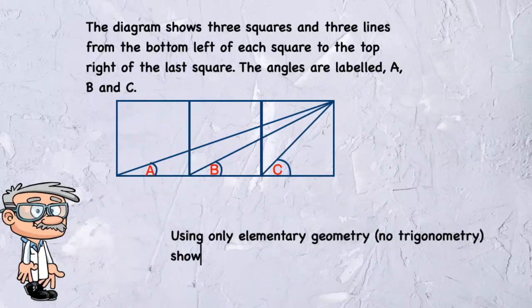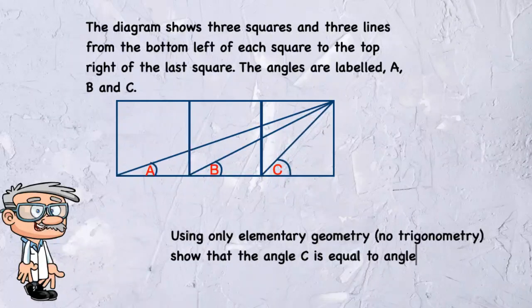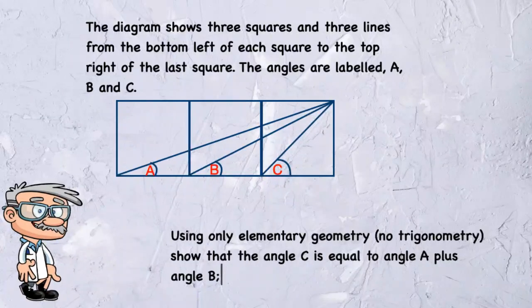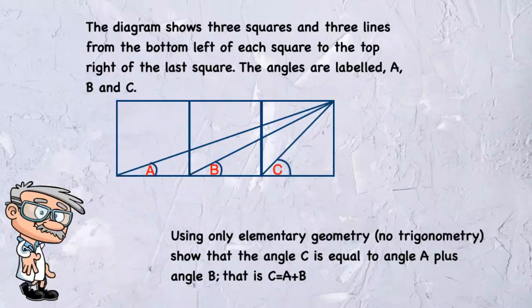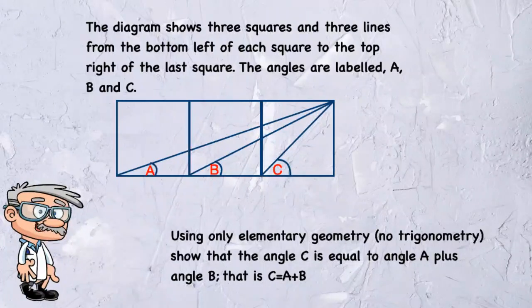Using only elementary geometry, no trigonometry, show that the angle C is equal to the angle A plus angle B. That is, C equals A plus B.